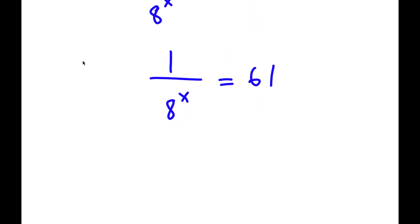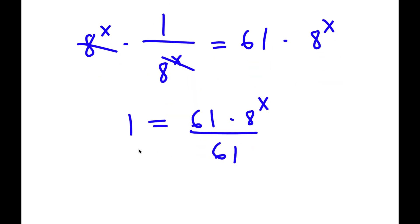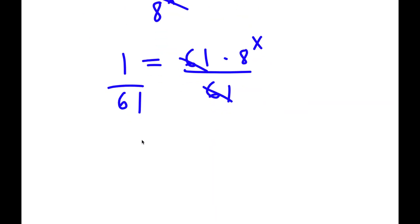I'm going to multiply both sides by 8 to the power of x, so those cancel out and I have 1 equals 61 times 8 to the power of x. Then I divide both sides by 61, giving me 1 over 61 equals 8 to the power of x.